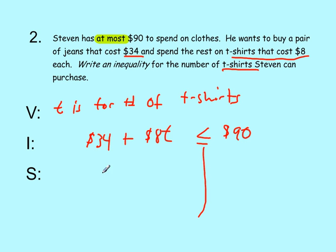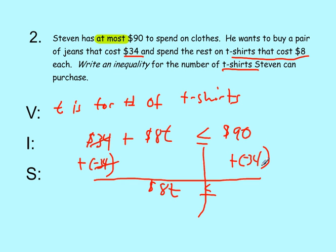And then we are going to solve it just like we did the last problem. We are going to add negative $34 to both sides. This term will cancel out and we will have $8T is less than or equal to $90 plus negative $34. So that comes out to be $56. And then we are going to divide by $8. So T is less than or equal to $7. So he can buy at most $7 t-shirts. He can buy less than $7 or $7.